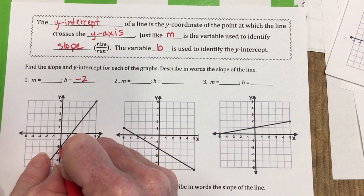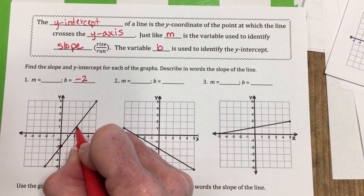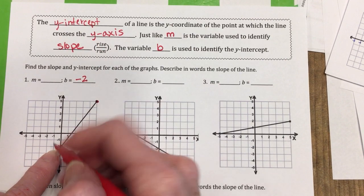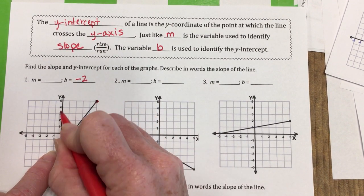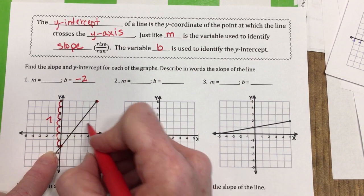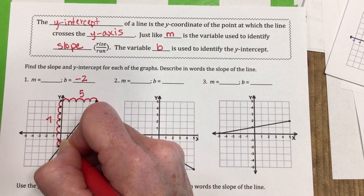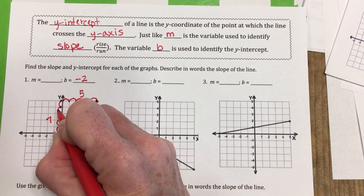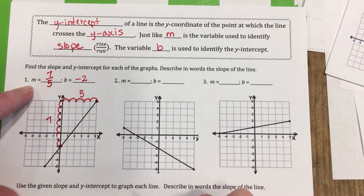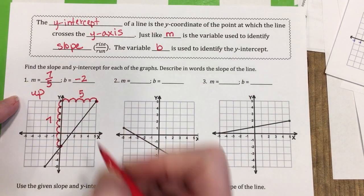Now I'll choose a second point on the line. Sometimes this is hard because it doesn't land cleanly on an intersection, but there's a point already identified for me. I need to find rise over run: the line goes up, so that's a positive change — up one, two, three, four, five, six, seven — rise is seven. Then the run goes over one, two, three, four, five — run is five. So slope is seven over five. The line is going up, so it's positive.